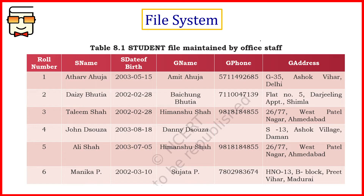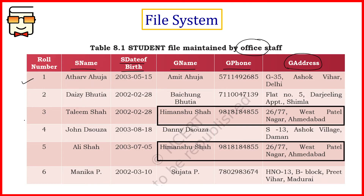Let's take an example of a file system. This is a student file maintained by the office staff. It contains the roll number, name, date of birth, guardian name, phone number of the guardian, and address of the guardian. If you look carefully, records three and five have the same guardian information — it might be that one class has twins or siblings. This is a clear repetition of data and should be avoided. A separate file should maintain guardian information, and here we can store only a marker pointing to that information, so the data in those three columns is not duplicated.